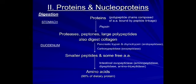In the duodenum, trypsin and chymotrypsin — which are endopeptidases — along with carboxypeptidase, an exopeptidase, cleave proteins into small peptides and free amino acids. Finally, exopeptidases such as aminopeptidase, dipeptidase, and tripeptidase produce amino acids, accounting for 98% of dietary protein digestion. The overall sequence is: polypeptide → peptide → peptone → amino acids.